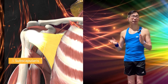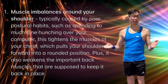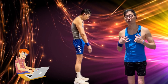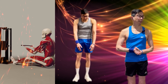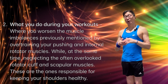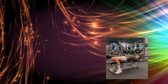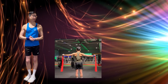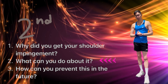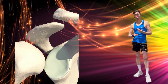I have already partially answered the first question — why did you get shoulder impingement — by briefly going through the anatomy. The first cause is muscle imbalances around your shoulder, typically caused by poor postural habits such as spending too much time hunched over your computer. This tightens the muscles of your chest, which pulls your shoulder forward into a rounded position, and it also weakens the important back muscles that are supposed to keep it back in place. The next reason is what you do during your workouts — worsening the muscle imbalance by overtraining your pushing and internal rotator muscles while neglecting the rotator cuff and scapular muscles, which are responsible for keeping your shoulders healthy.